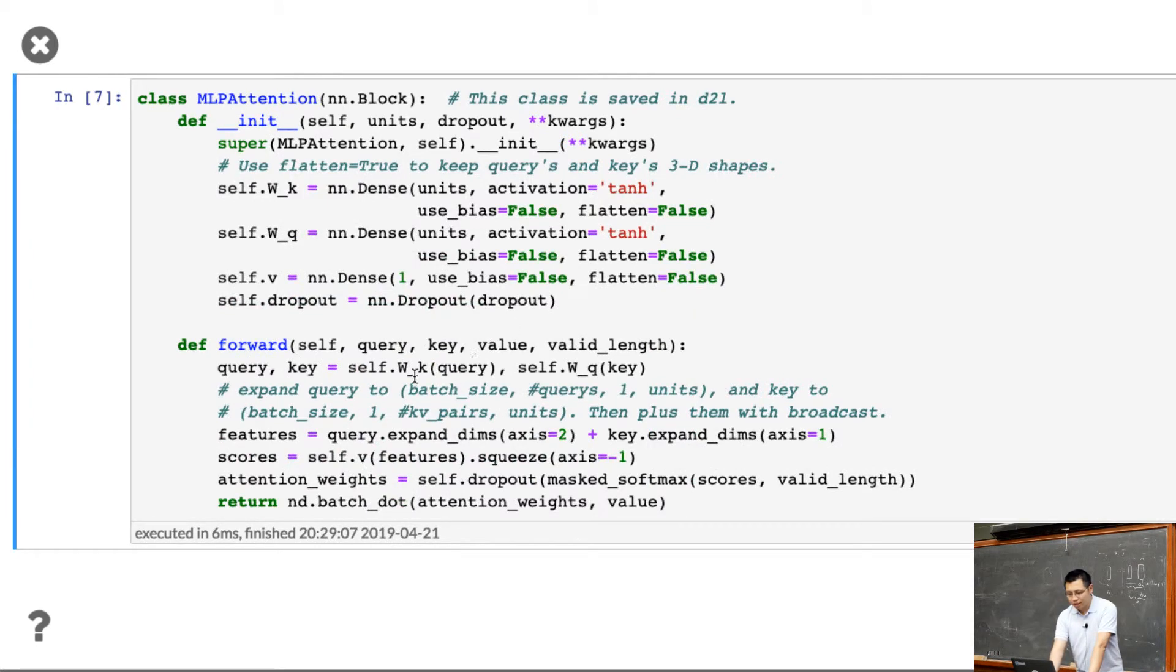So once we have the parameter created, what we do here, given the query, we first project into a projected query, and also project the key as well, to get the query and the key. So now we have the same length. But the thing here, for each key value pairs, we want to sum them together. So what we do here is, let me maybe show some example here. We have the keys, maybe m keys, you have n queries, for example. For each one, you want to add them together to get a new one. But if you're adding these two directly, you don't get anything. What you do here, you just make it into a 3D matrix.